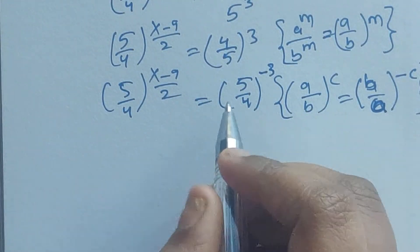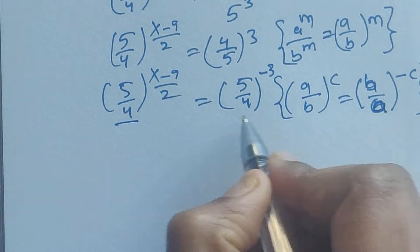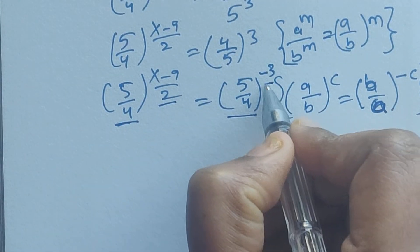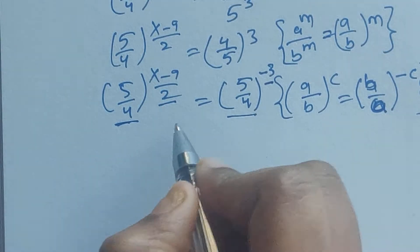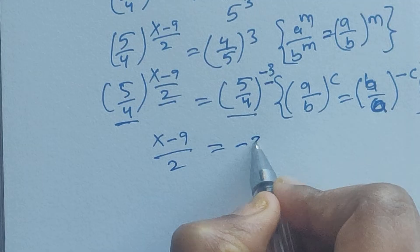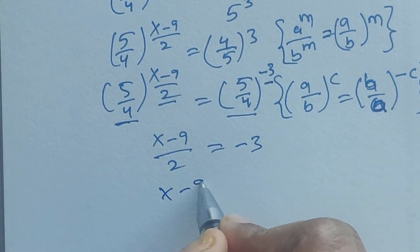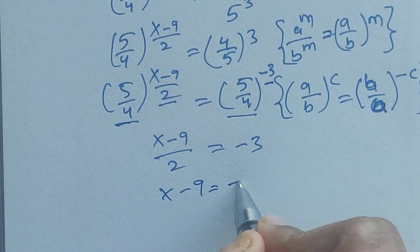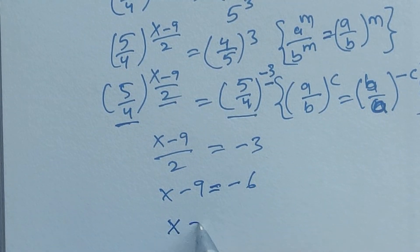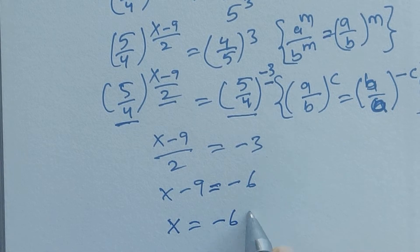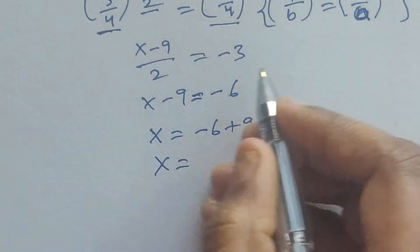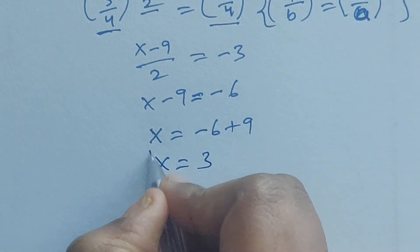Now here we have the same base on both sides, and the exponents are different. So we take only the exponents: (x minus 9) divided by 2 equals minus 3. So x minus 9 equals 2 times minus 3, which is minus 6. Therefore x equals minus 6 plus 9, so x equals 3. This is the x value.